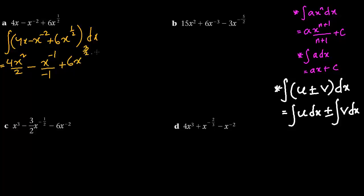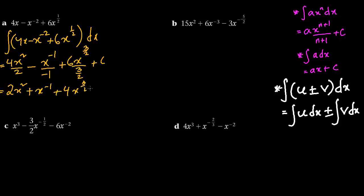We give a plus; 6 is the constant, x to the power half plus 1 is 3 by 2, divided by 3 by 2, and plus c for the constant of indefinite integration. Simplifying: this becomes 2x squared, the minus minus cancels to give plus x to the power minus 1, and 6 divided by 3 by 2 is 4, so we get 4x to the power 3 by 2, plus c.